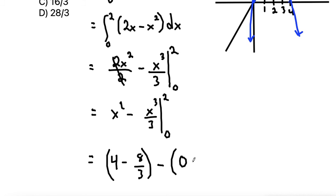So that simplifies to, let's get a common denominator, so 4 we can write as 12/3. Minus 8/3, 12 minus 8 is 4, so 4/3 would give us our final answer.